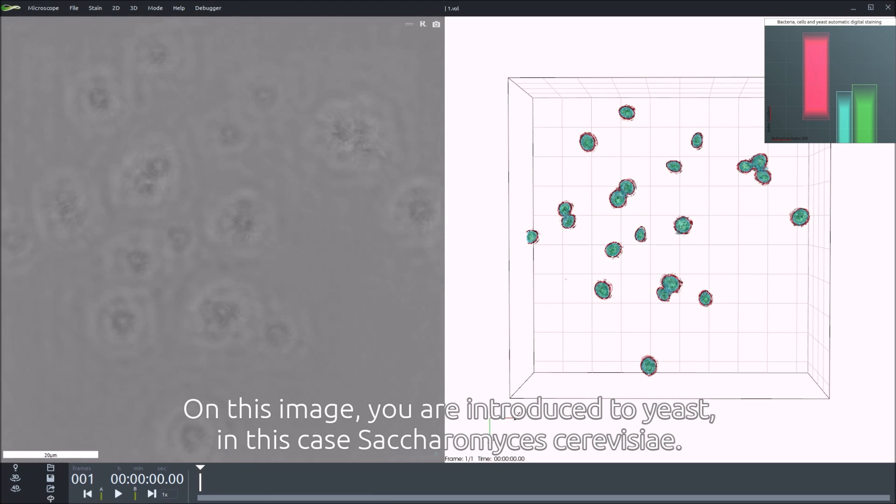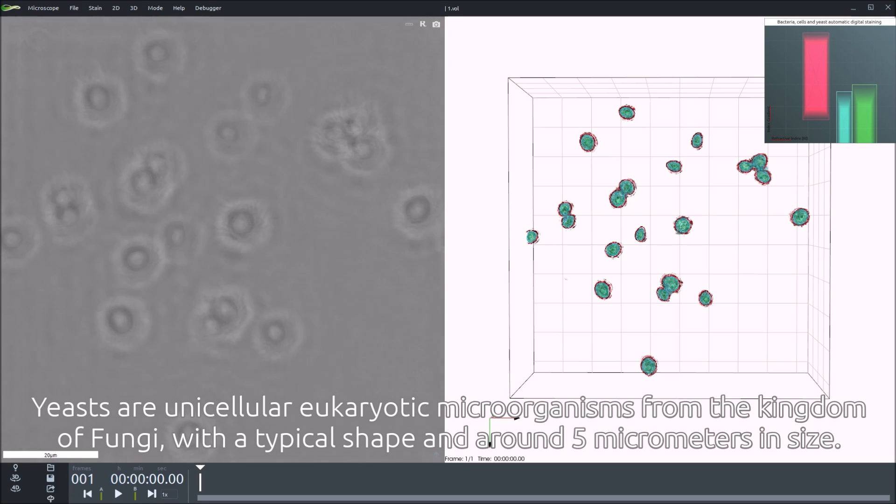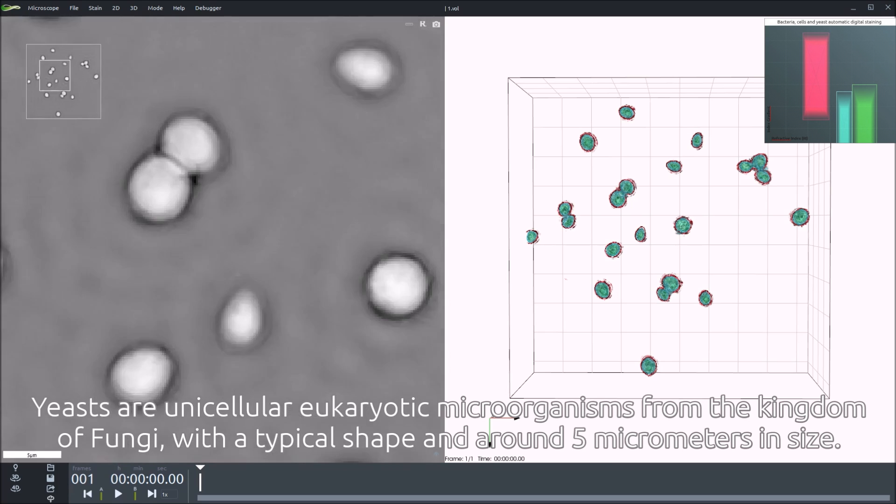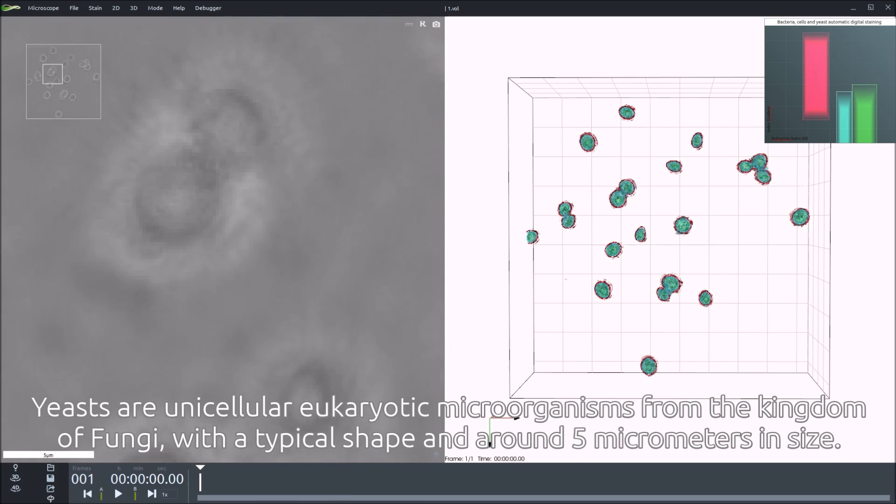On this image, you are introduced to yeast, in this case Saccharomyces cerevisiae. Yeasts are unicellular eukaryotic microorganisms from the kingdom of fungi with a typical shape and around 5 micrometers in size.